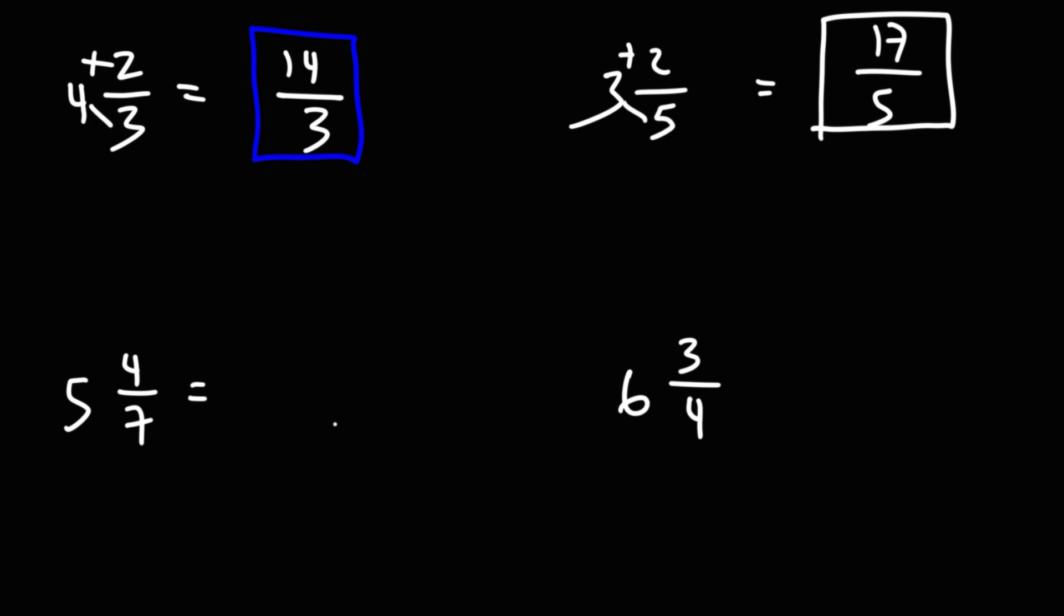For the third mixed number, we have 5 and 4 sevenths. So we're going to rewrite the denominator. And then we're going to multiply 5 and 7, which is 35, plus 4, that's 39. So that's the answer for the third example.